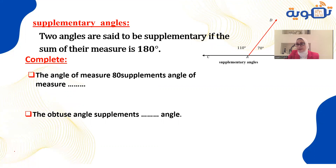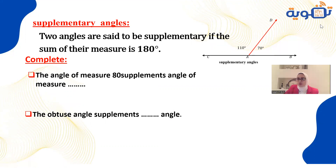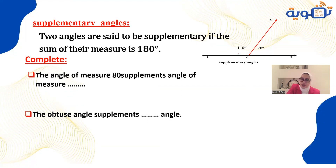Two supplementary angles: to say two angles are supplementary, their sum must equal 180 degrees. Since 110 plus 70 equals 180, those two angles are supplementary.